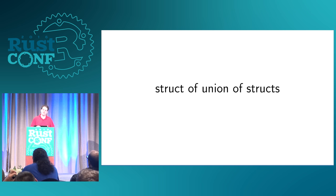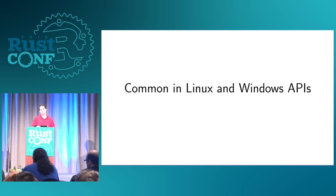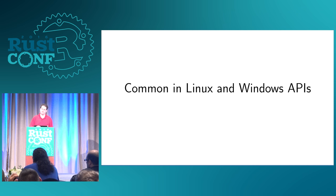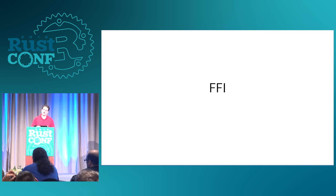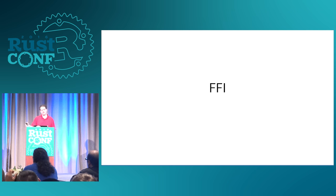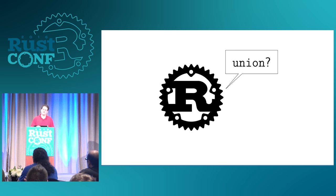That's actually a really common pattern in Linux and Windows APIs: here's some discriminant, and here's the details of all the variations. So it's common in FFI, it's common in Linux and Windows APIs. The problem here is Rust doesn't actually know what a union is — or didn't actually know what a union is.